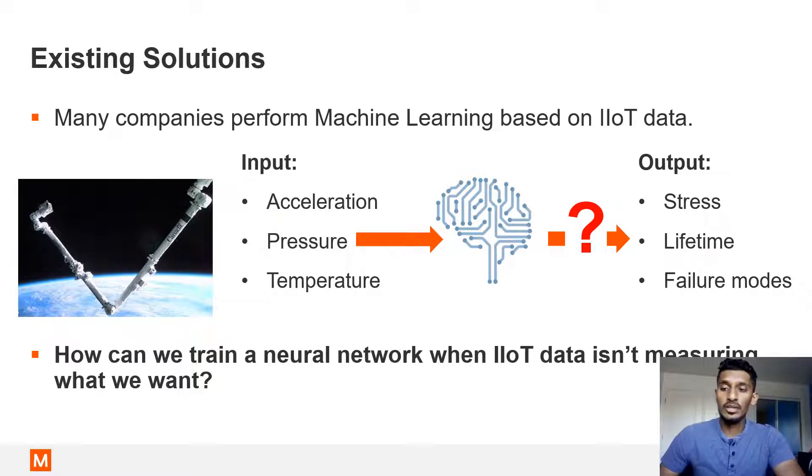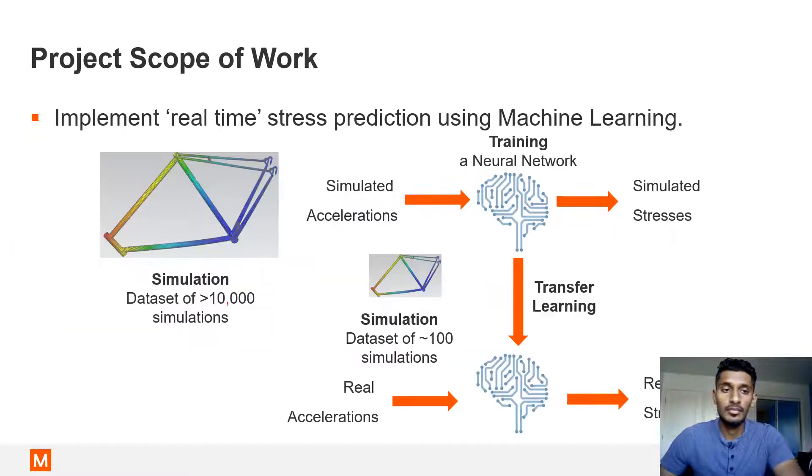In addition, the Digital Twin must closely model the behavior of the real structure and must be able to return results quickly when fed new measured values. Finite element models of complex structures can have problems with both of these, often taking too long to compute and return results.